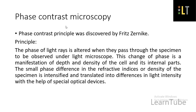The first type is the phase contrast microscope, discovered by Fritz Zernike. The principle of working is that the phase of light rays is altered when they pass through a specimen observed under the light microscope. This change of phase is a manifestation of the depth and density of the cell and its internal parts. Since there is very little difference in the refractive indices or density of the specimen, its internal structures are not made visible by bright field microscopy.